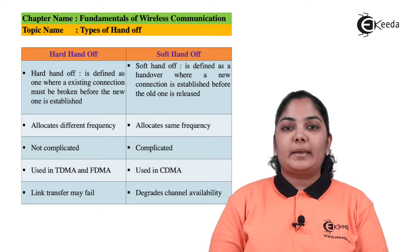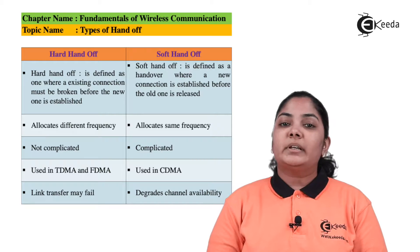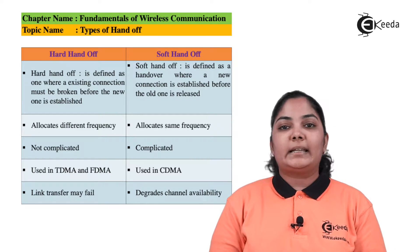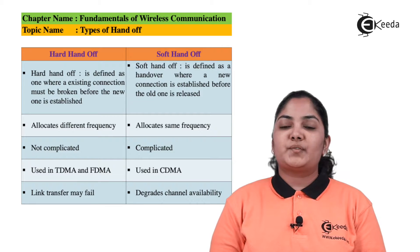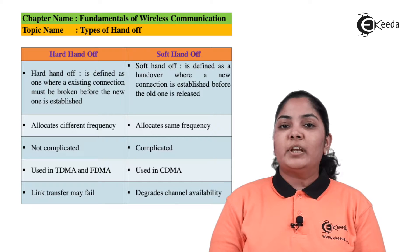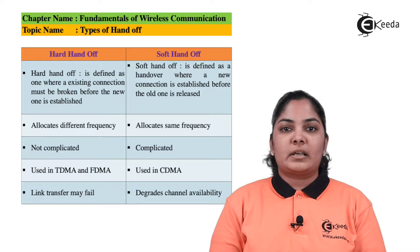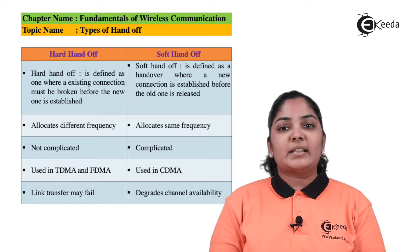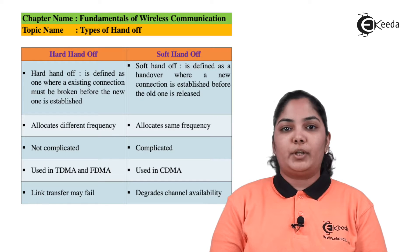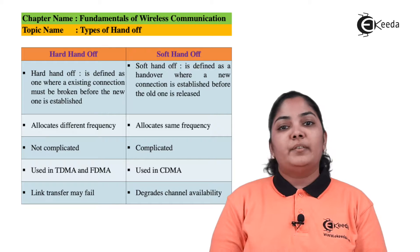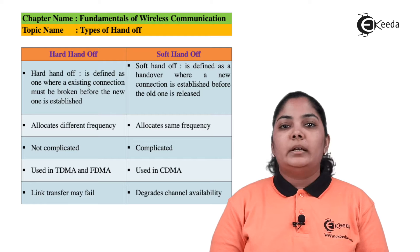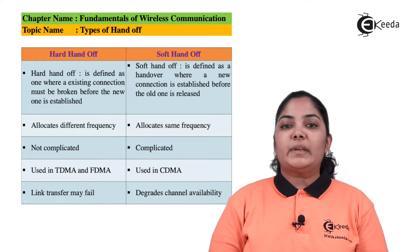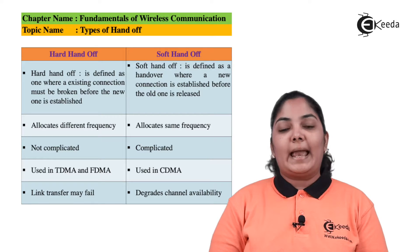Hard handoff is used in techniques like TDMA and FDMA, whereas soft handoff is used in CDMA. CDMA stands for Code Division Multiple Access, where every user is divided by code and not by frequencies, meaning every user transmits data on the same frequency. Hence in soft handoff, the same frequencies are used while connecting to a new base station.